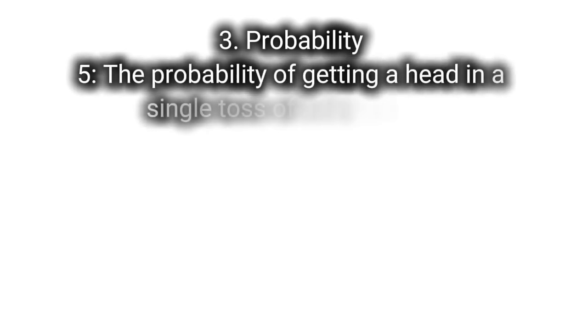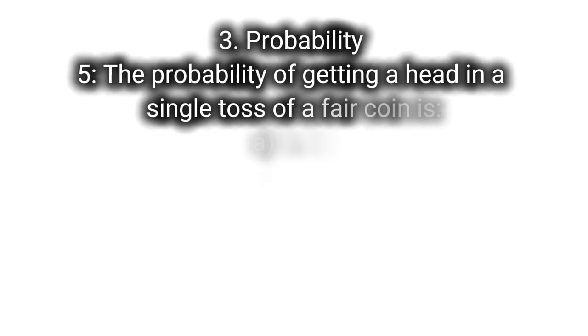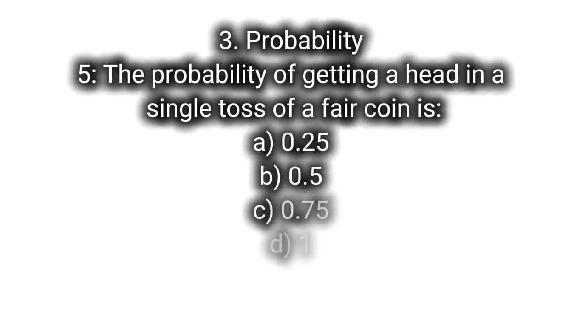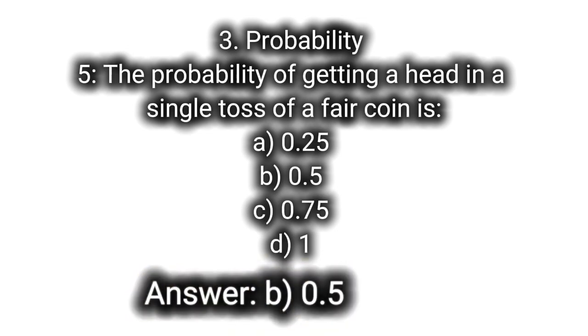3. Probability. Q5: The probability of getting a head in a single toss of a fair coin is A. 0.25, B. 0.5, C. 0.75, D. 1. Answer: B. 0.5.